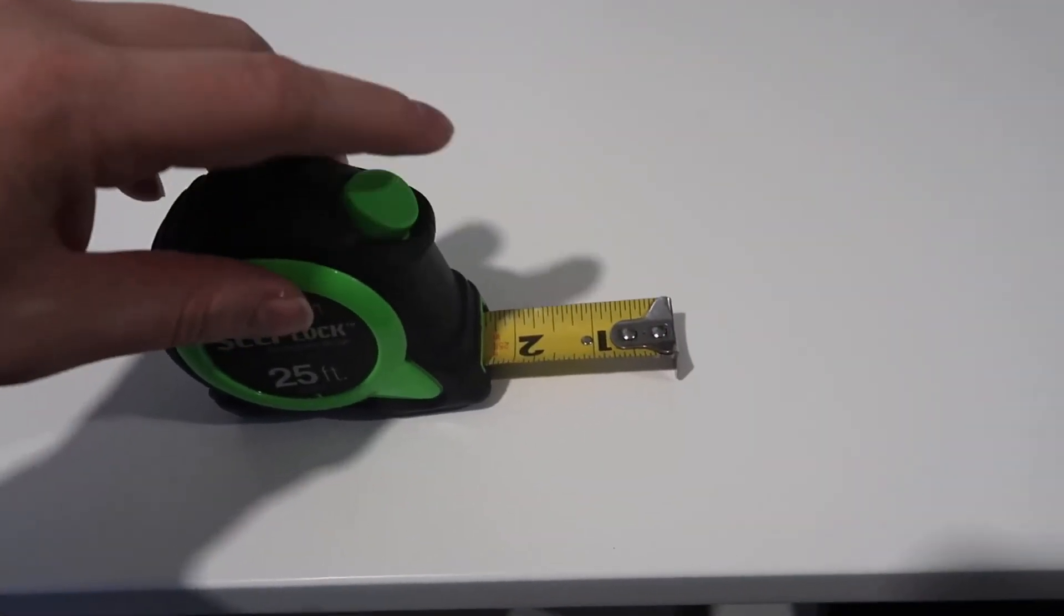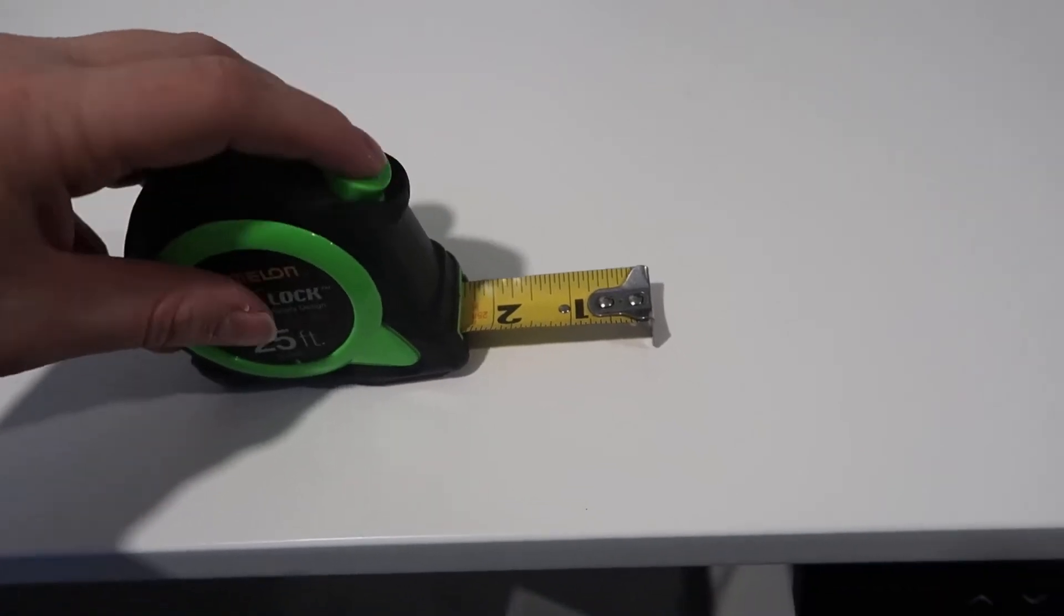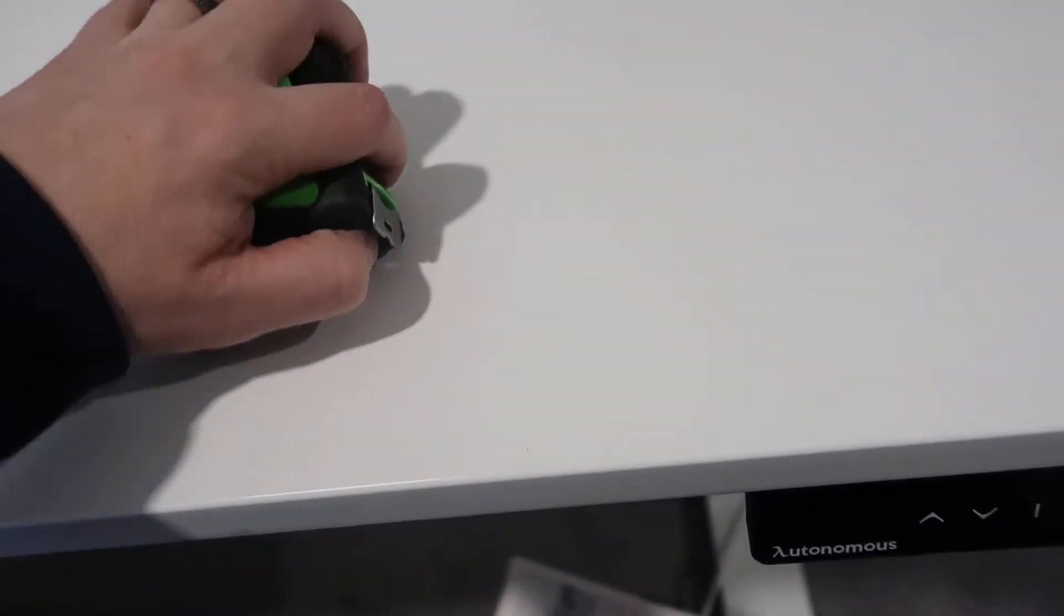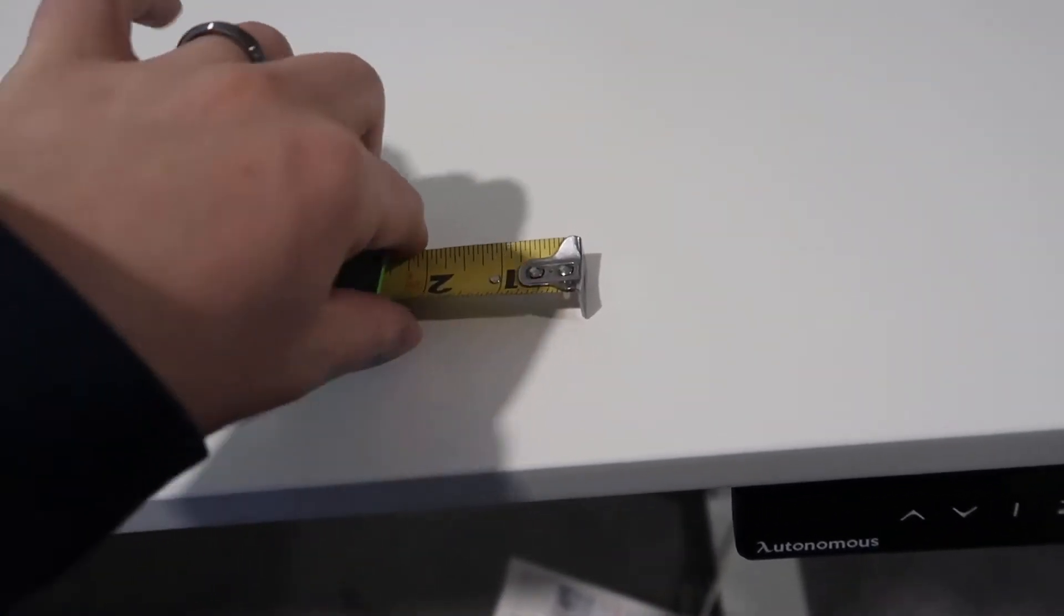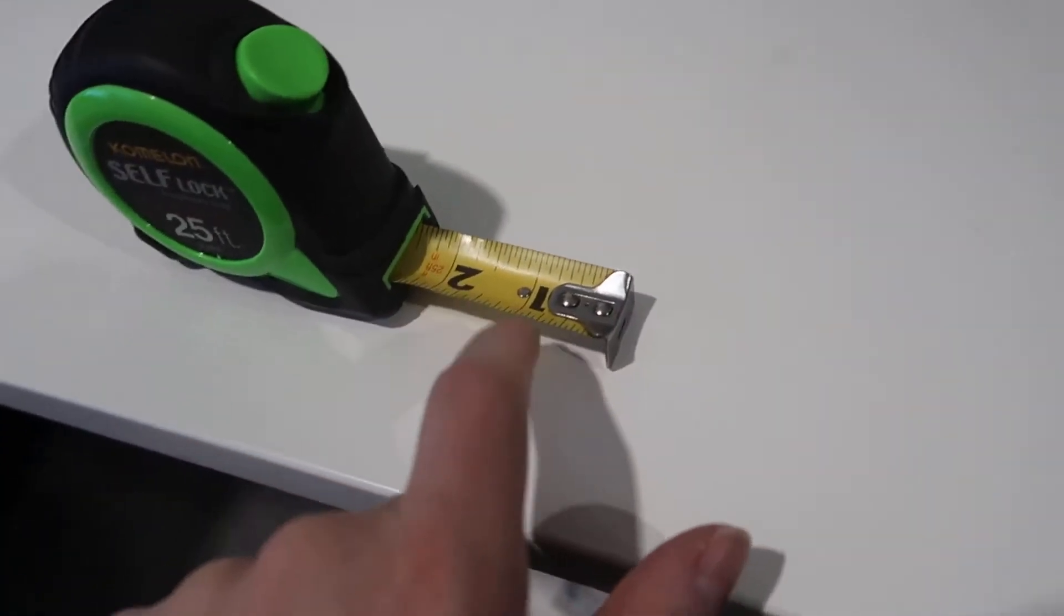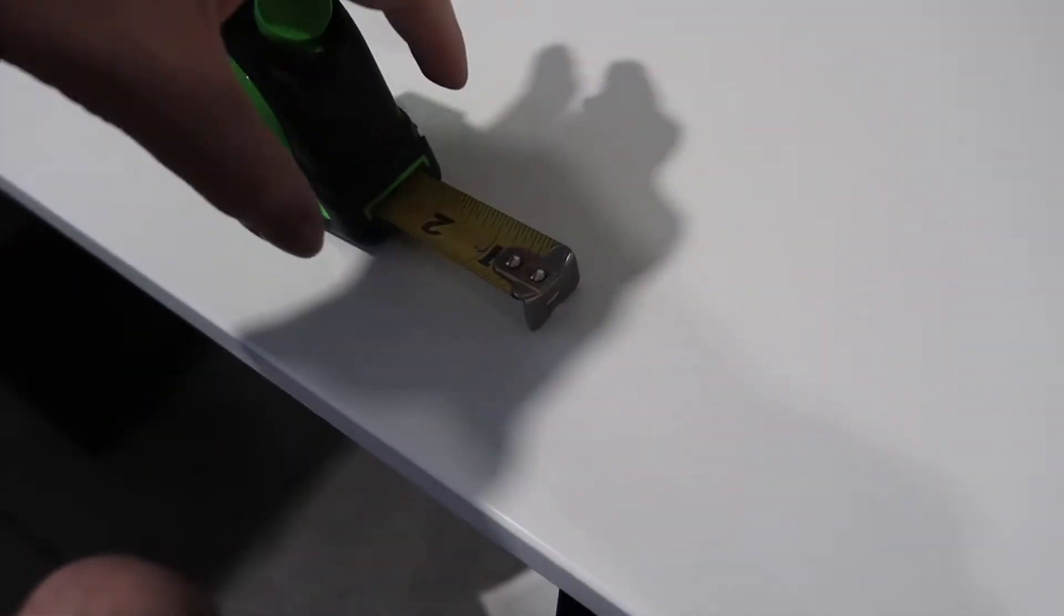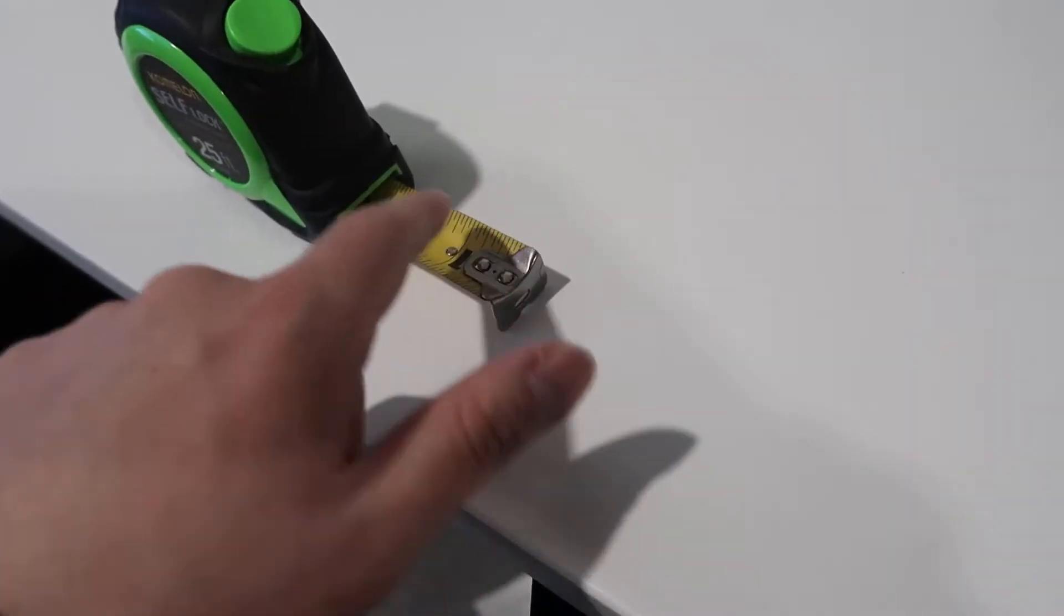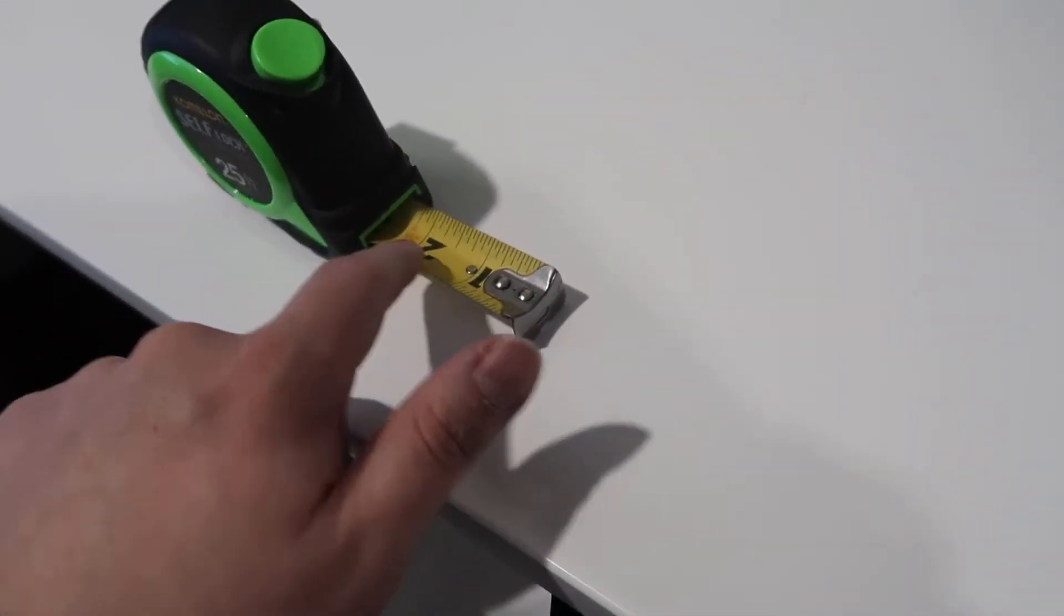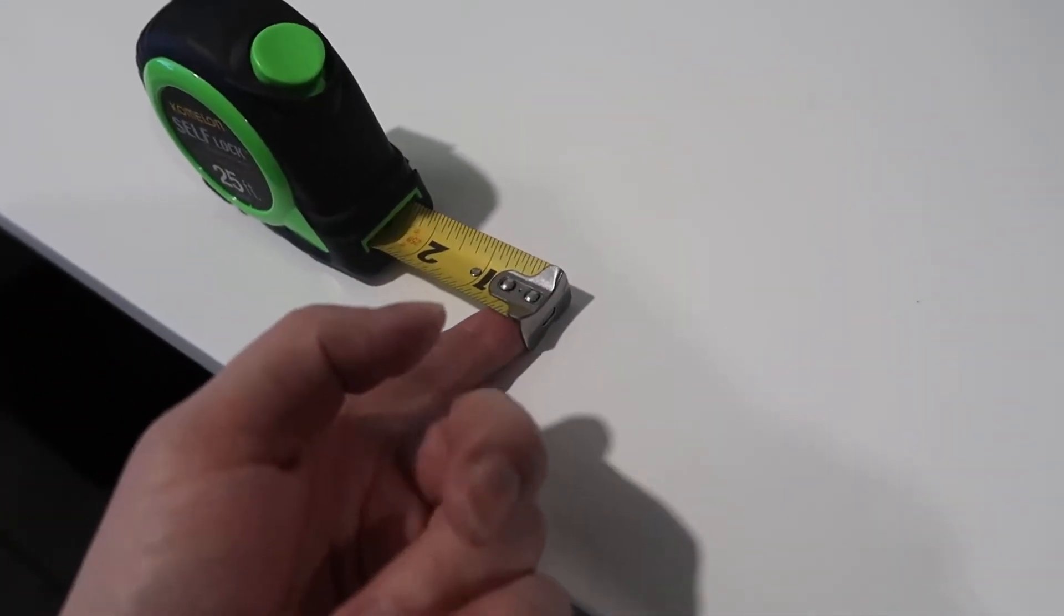This has a very large button on the front that makes it easy to retract the tape measure. The other thing you'll notice is that as the tape comes out, it has a nice bend in the center. This allows it to come out at an angle so it's not easily going to collapse on you.